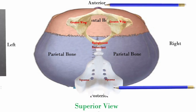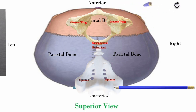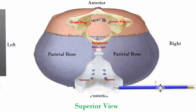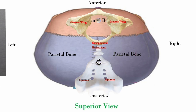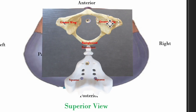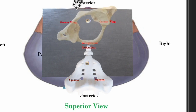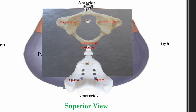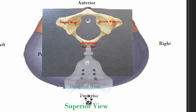Let's talk about the axes and planes of a lateral strain pattern. You're going to have two vertical axes: one right over the body of the sphenoid, and the other right over the foramen magnum where the occiput is. Rotation occurs around these vertical axes. The plane is going to be a transverse or horizontal plane — each bone rotates around its own vertical axis in a transverse or horizontal plane.